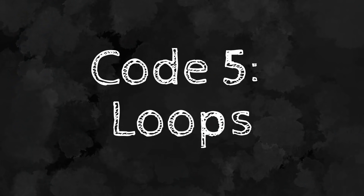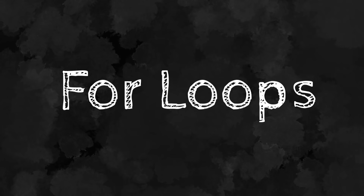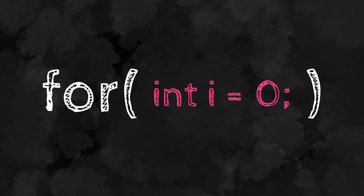Code number five is loops. We'll go over the most common: the for loop. A loop is a way of repeating a certain piece of code. The syntax starts with the keyword for, then parentheses. Inside, you first create an integer variable — often called i by convention, short for iteration — and assign it a value of 0. Finish this section with a semicolon. This is the initializer.